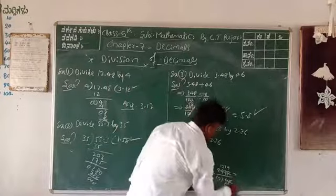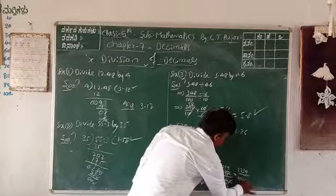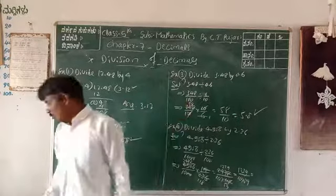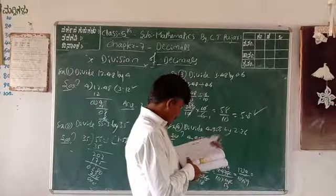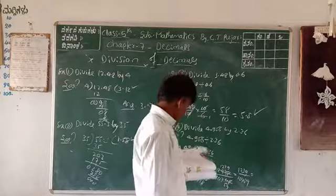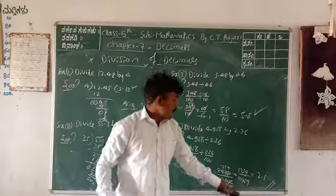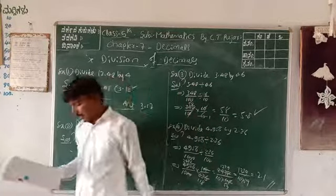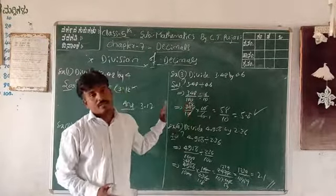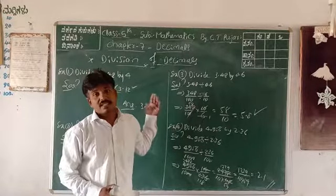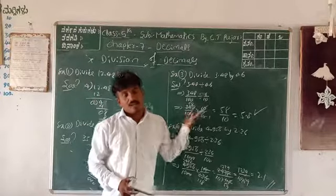Last example: 4.956 ÷ 2.36. After converting to fractions and simplification, the answer is 2.1. You can practice more examples in your textbook covering addition, subtraction, multiplication, and division of decimals. We will continue in the next class.